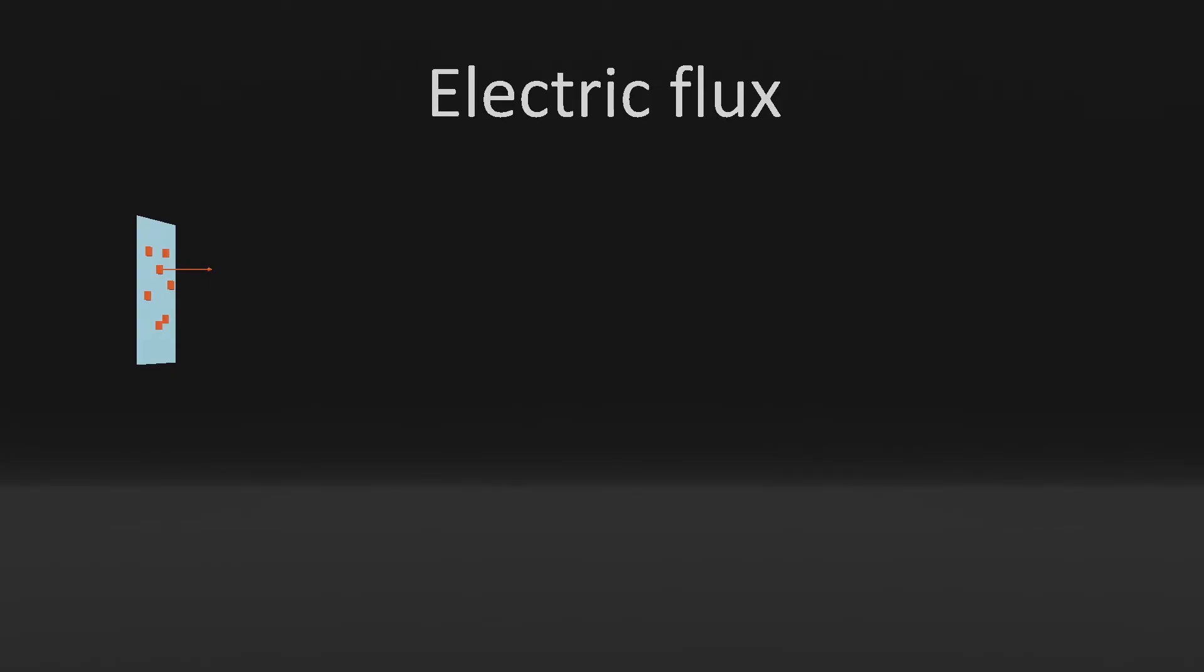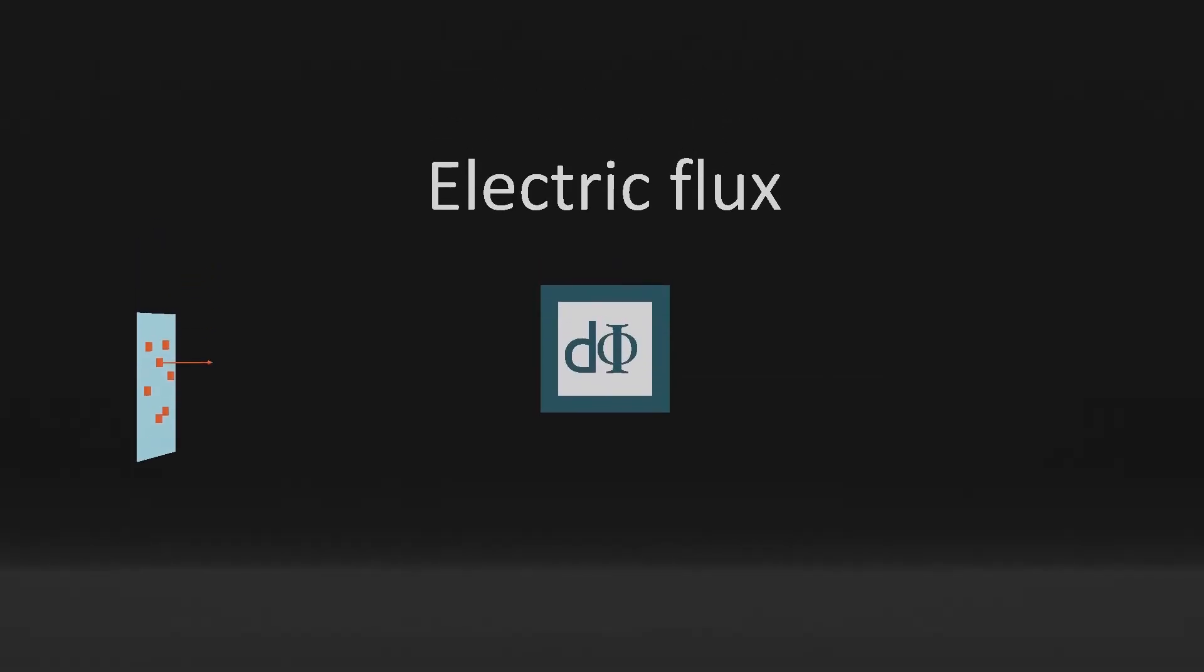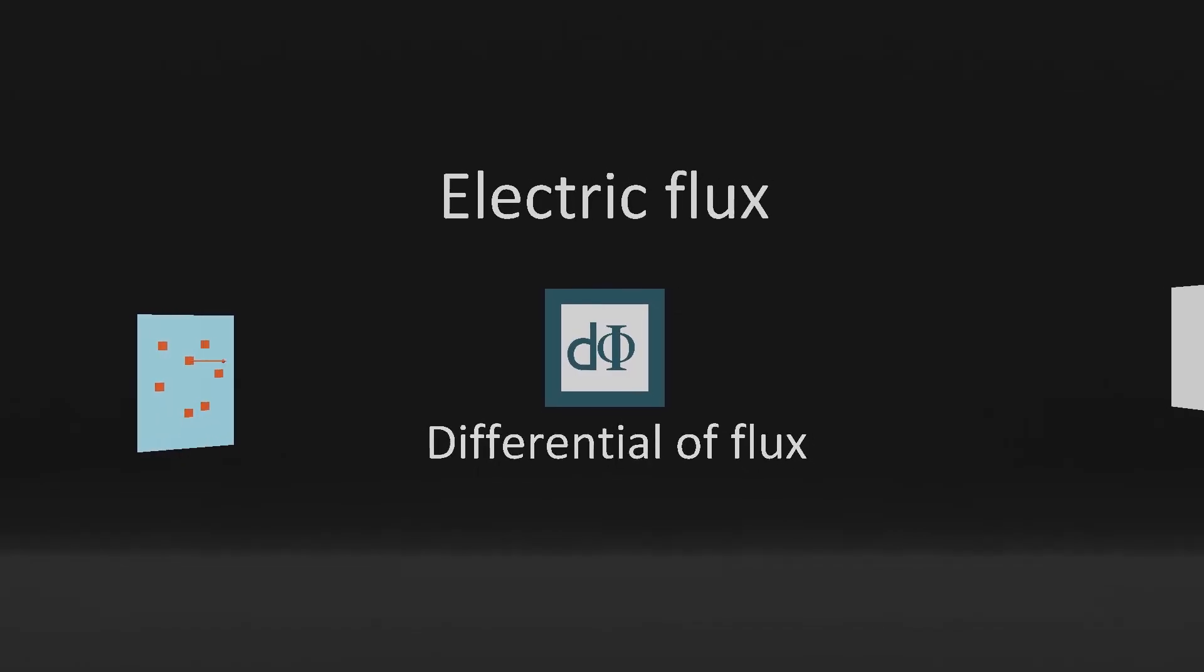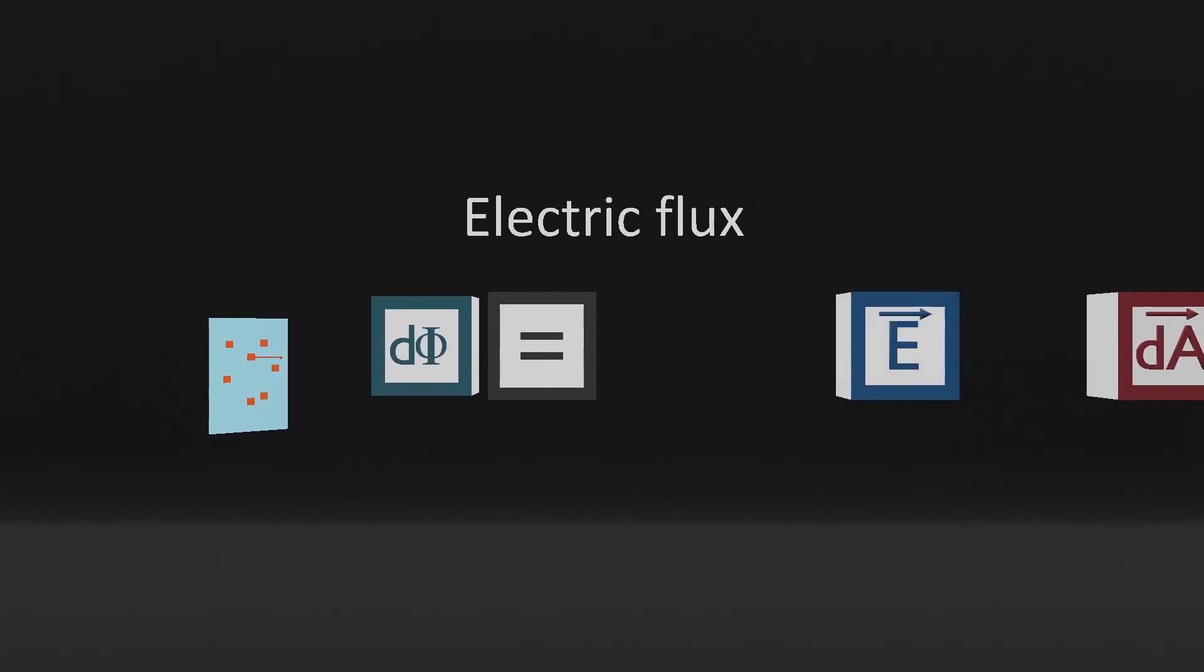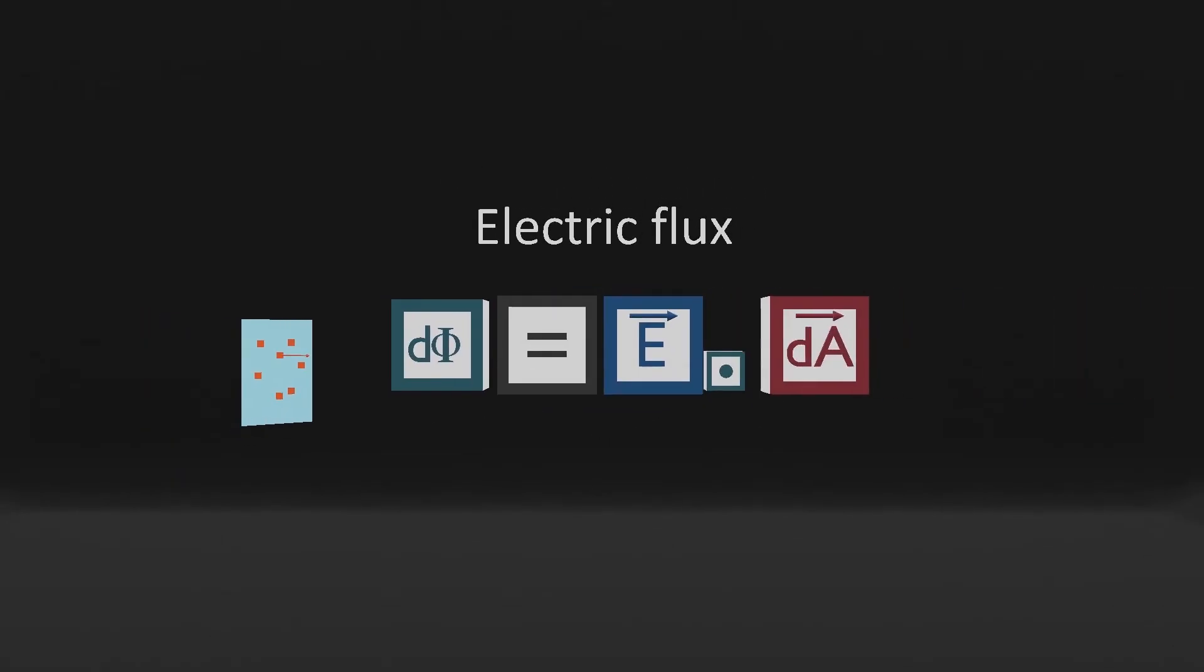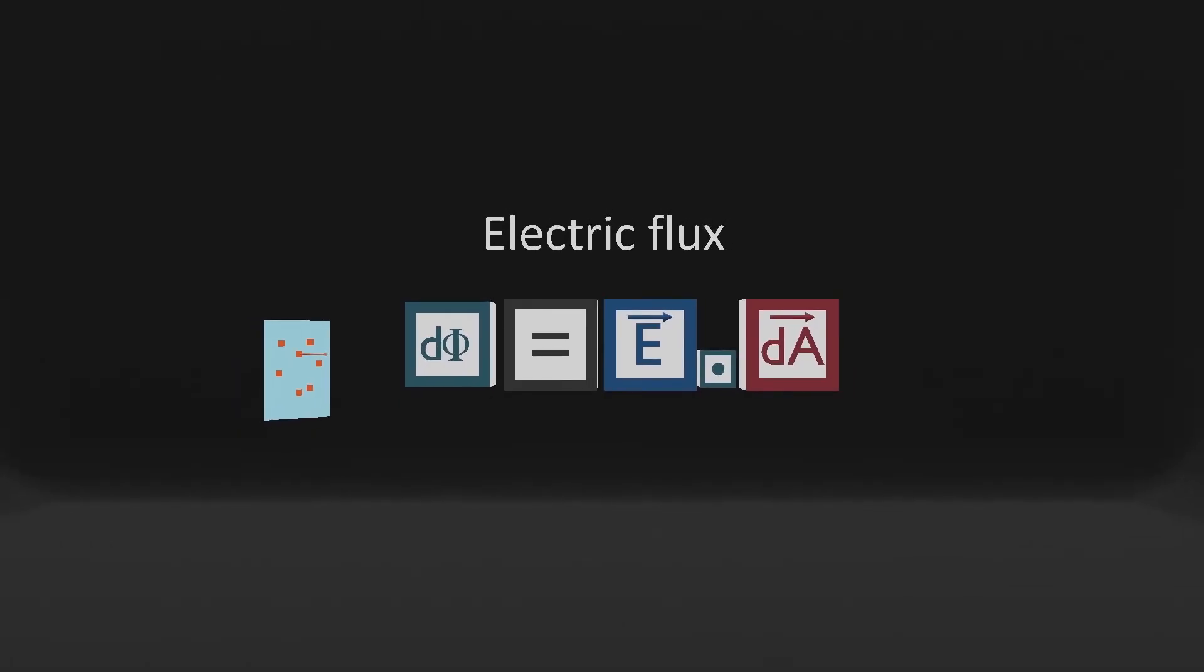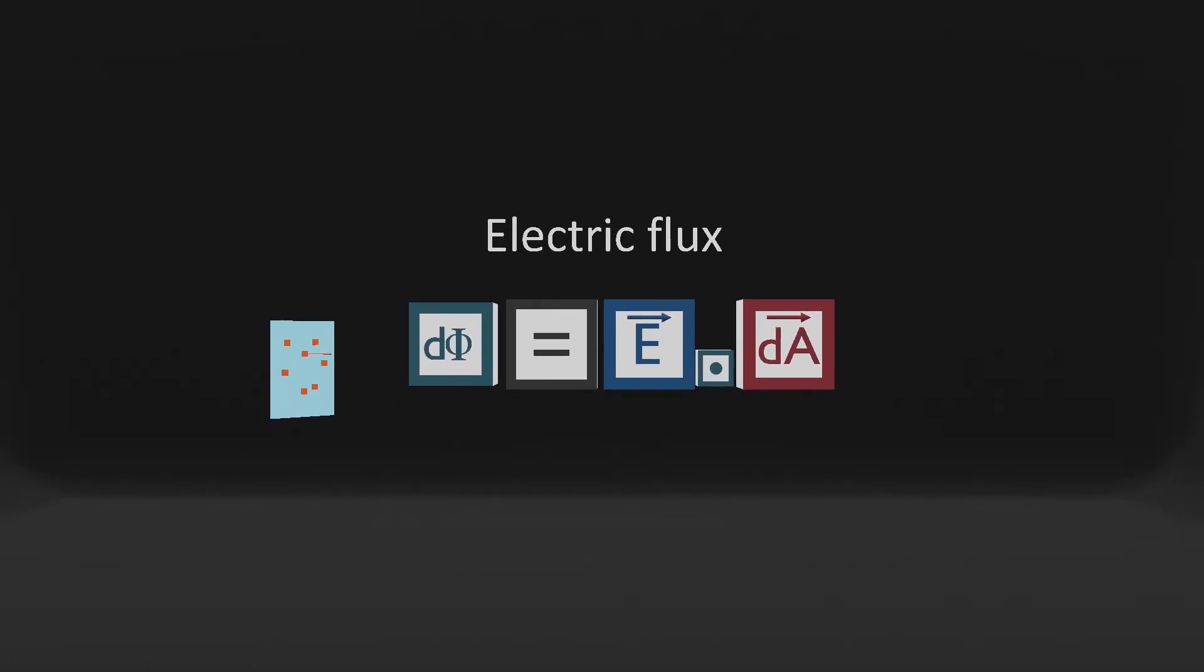The electric flux passing through dA is denoted by dφ and is also called the differential of flux. It is equal to the dot product of the electric field and the area vector. The differential of flux defines the dot product of the electric field and area vector.